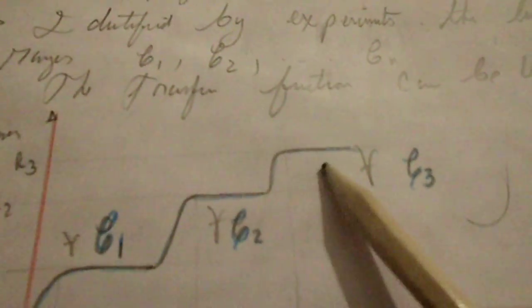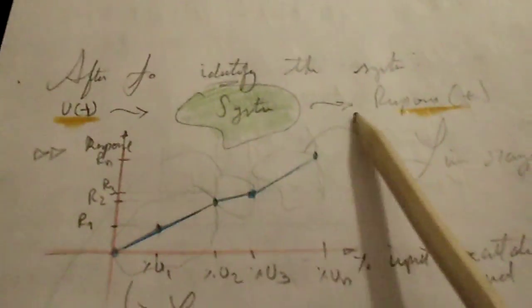This is range 1, range 2, and range 3. Because in the relation between input and response, we can recognize or approximate three linear regions or areas for the system.